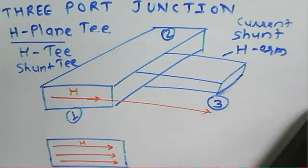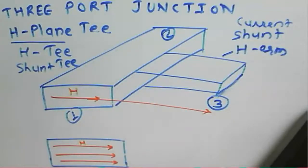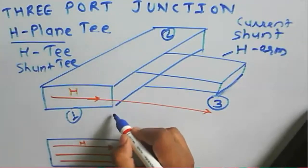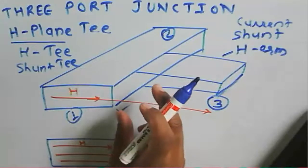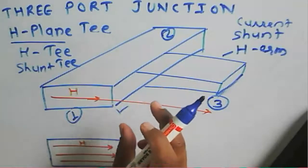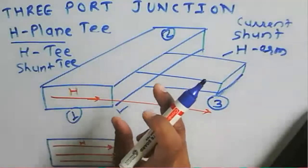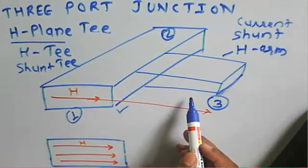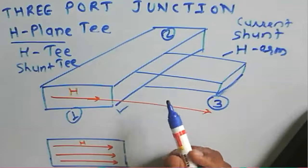For the H-plane T, if port 3 is perfectly matched, and if the arm lengths from the junction to port 1 and port 2 are the same, then port 1 and port 2 are electrically symmetrical with respect to port 3.